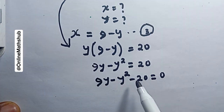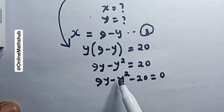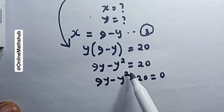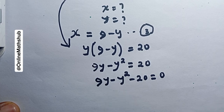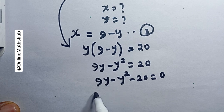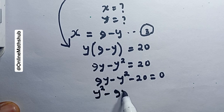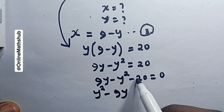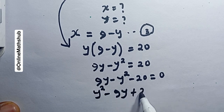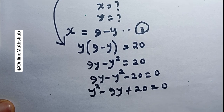I want the coefficient of y squared to be positive 1, not minus 1, so I'll multiply through by minus 1. This changes the equation to y squared minus 9y plus 20 equals 0. Now we have a standard quadratic equation.